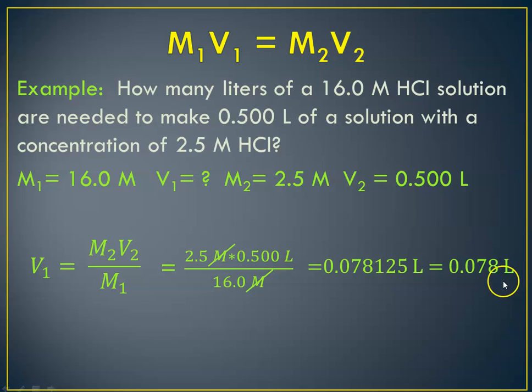Now what that means is that I only need 78 milliliters of the concentrated solution. And then I'll put that into a 0.5 liter volumetric flask. And then I'll dilute it up to 0.5 liters. And the resulting solution will be a 2.5 molar, which is obviously much less concentrated.